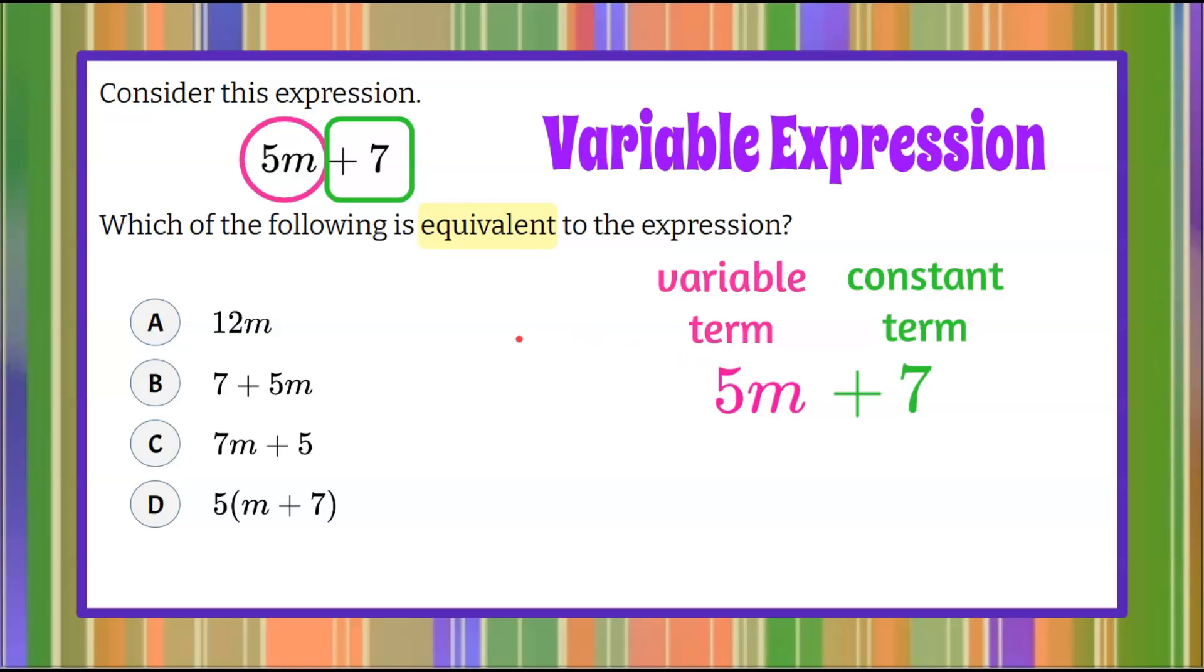So when we look at these we know that they added here 5 plus 7 to get 12. That's an illegal move in math so we can eliminate answer choice A. 12m is not equivalent to 5m add 7.